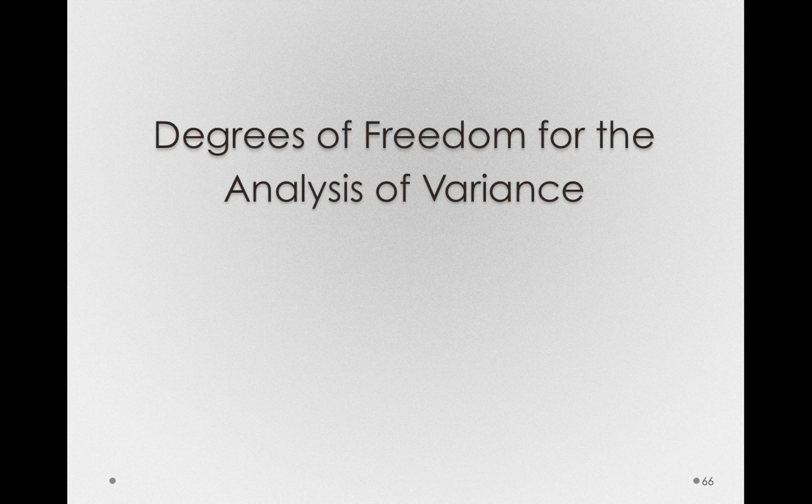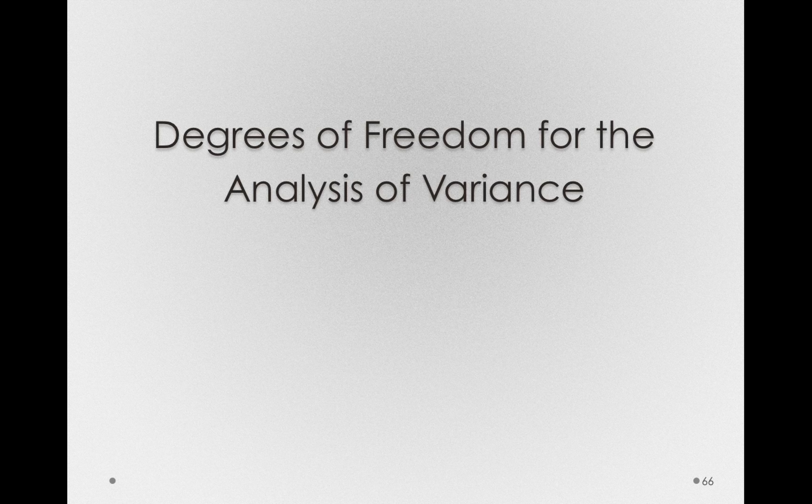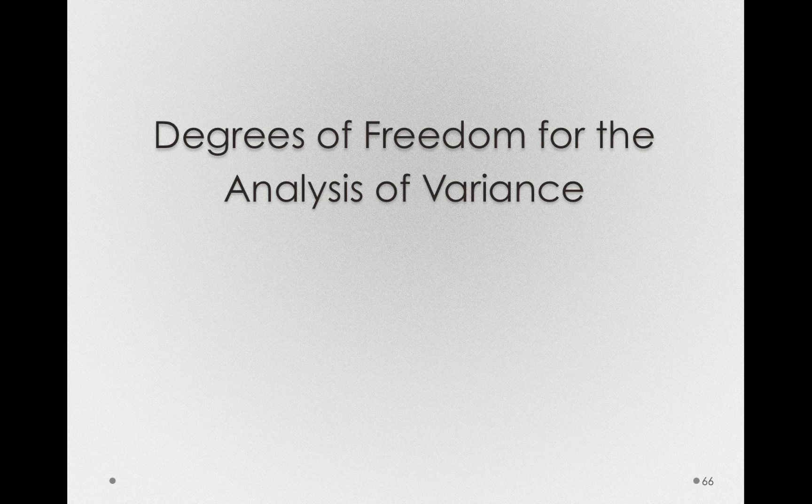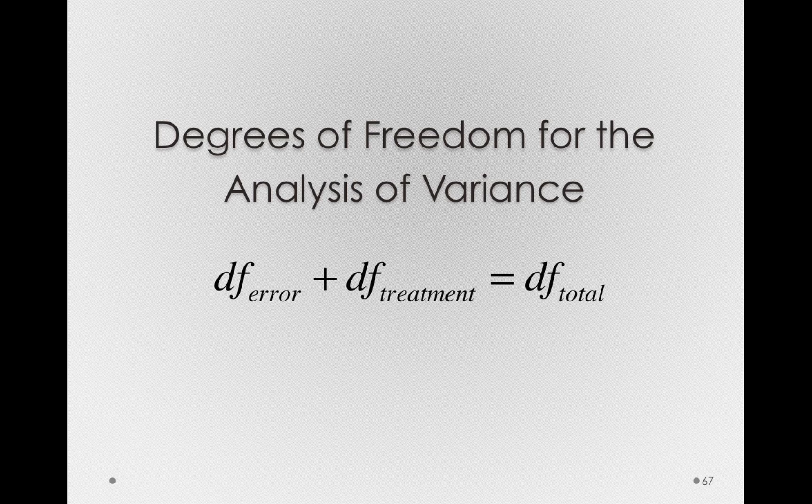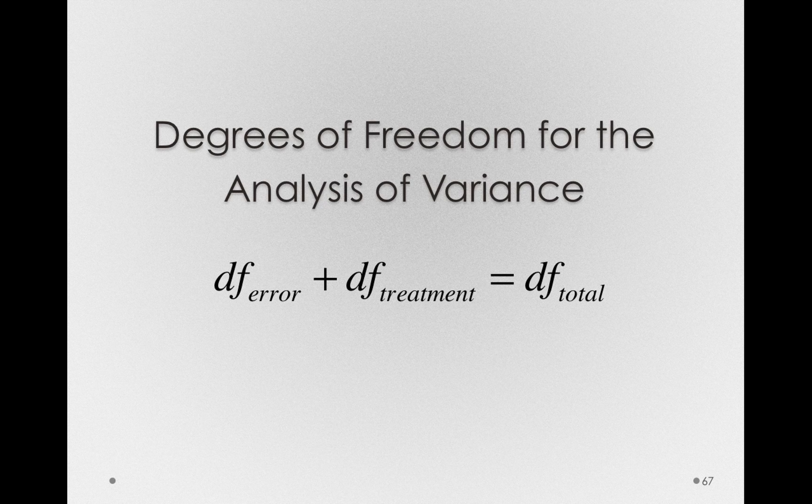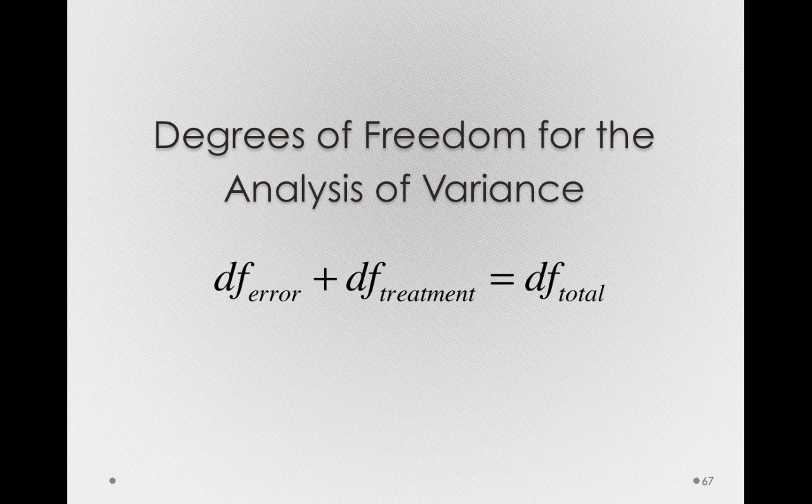Degrees of freedom simply represent how much independent information we have, and what we're going to do is allocate some of that independent information to the sums of squares for treatment and some of it to the sums of squares for error. So our degrees of freedom total, the total amount of information we have in the data set, is simply going to be one part degrees of freedom error and one part degrees of freedom treatment.